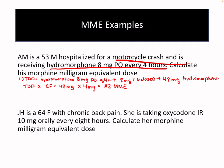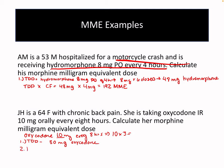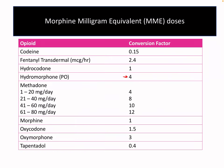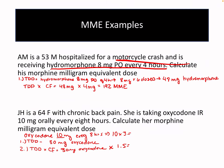Another example: a patient is receiving oxycodone 10 milligrams every eight hours. Let's calculate the total daily dose — that would be 10 milligrams times 3 doses per day, equaling 30 milligrams. Now we multiply that total daily dose times the conversion factor for oxycodone, which is 1.5. That gives us 45 morphine milliequivalents.